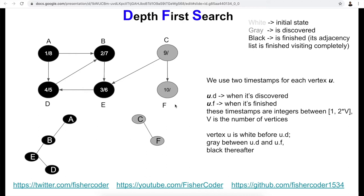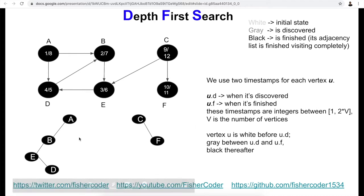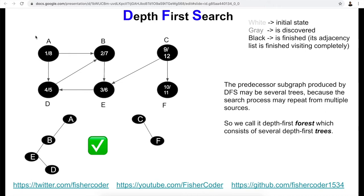There's nothing more to go from f, so we assign finish timestamp eleven to f, then backtrack and assign twelve to c. Now we have finished traversing all vertices in this graph. The start time is one and the finish time is twelve — twice the number of vertices (six), matching the definition. We produced a depth first forest consisting of two depth first trees: one rooted at a and one rooted at c.